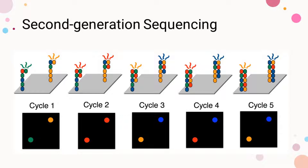Parallelization means that several synthesis experiments are being run at the same time. Each of many template strands is anchored on a chip, and only DDNTPs with fluorescent tags are available during the synthesis procedure — no DNTPs. Each type of DDNTP is tagged such that it emits a different wavelength or color. Since DDNTPs halt synthesis, the synthesis of new strands is synced; all new strands are the same length at the end of each synthesis cycle, at which point a picture of the chip is taken. These pictures are then analyzed by base-caller software to identify, or call, the complementary nucleotides.